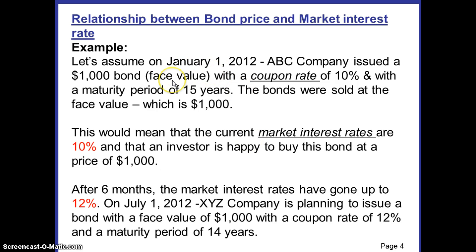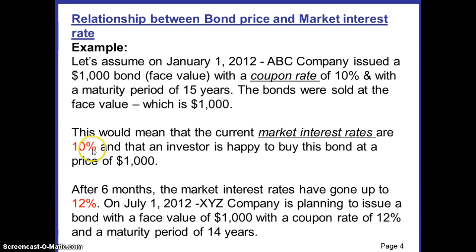The investor is happy to buy this bond because he will get the market interest rate of 10%, which is equal to the coupon rate of 10%. So when the market interest rate of a bond equals the coupon rate, the bond will sell at a price equal to its face value. A bond whose market interest rate equals the coupon rate will always have its face value equal to its market price.